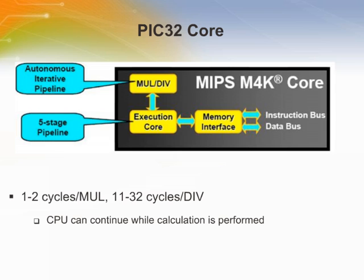The PIC32 uses the high-performance version of the Multiply and Divide hardware module. A very powerful feature of this module is that it contains its own autonomous pipeline. Once the CPU issues a Multiply or Divide instruction, the CPU may continue to fetch and execute next instructions while the Multiply and Divide unit performs calculation in parallel. If the CPU tries to access the result before the operation is complete, the CPU will stall until the operation is complete.